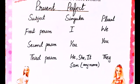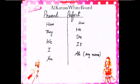Sabse zyada important question jo sab ke mind mein aata hai: has aur have kis ke saath use karna hai? Is cheez mein bahut zyada confusion ho jati hai. Have hum use karte hain: I, you, they, we ke saath. Has ko hum use karte hain: he, she, it, aur kisi bhi name ke saath — jaise Sam, Ali, Alia, Amna.